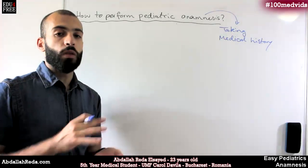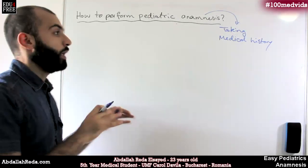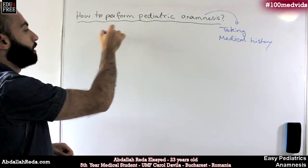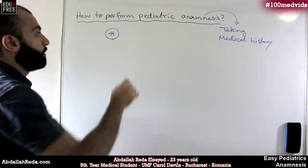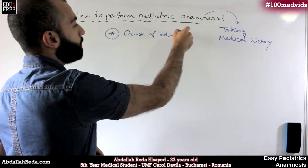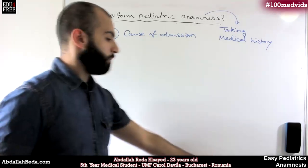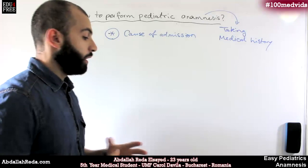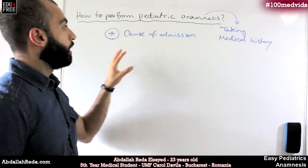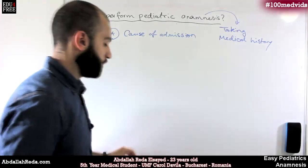That would be a bit difficult with a child. For children, it would be more oriented towards the parent. The first piece of information you need to get is the cause of admission. You can ask the child if they feel pain or discomfort, but you have to ask the parent — whether it was the mother or the father — about certain specific information. That's the first thing you need to know.